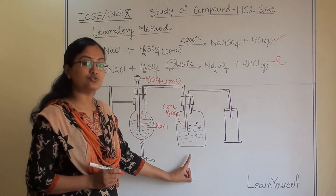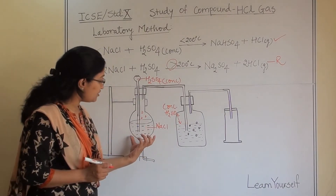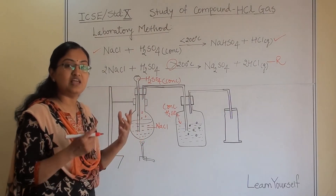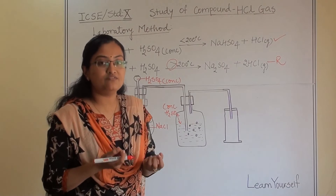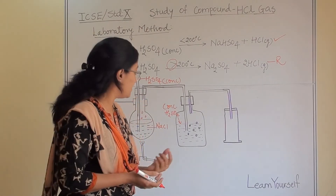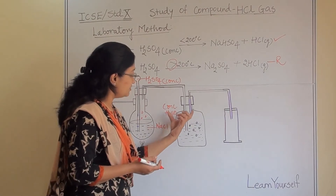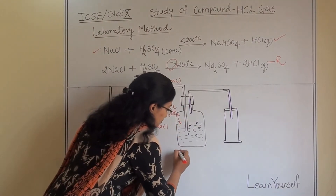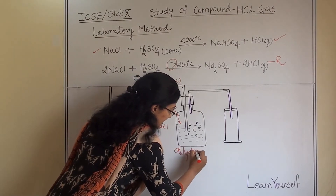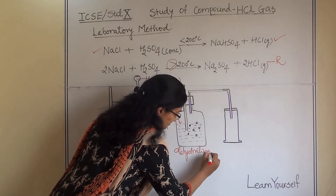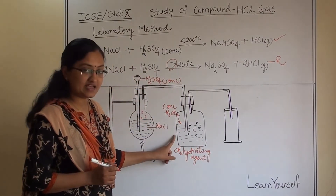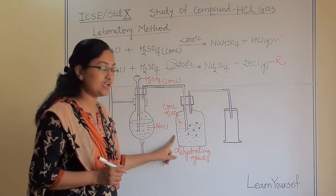Why are we doing this? Because whatever hydrogen chloride gas is generated from this reaction will contain some moisture, and we don't want moisture in our gas. That is why the concentrated sulfuric acid will act as a dehydrating agent.